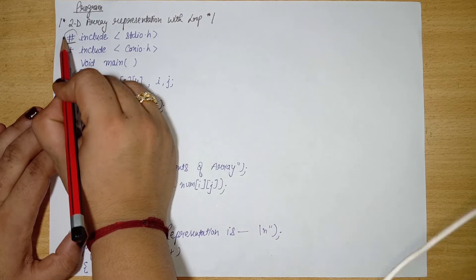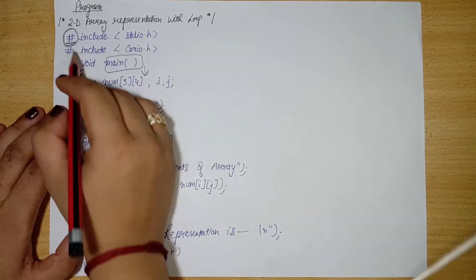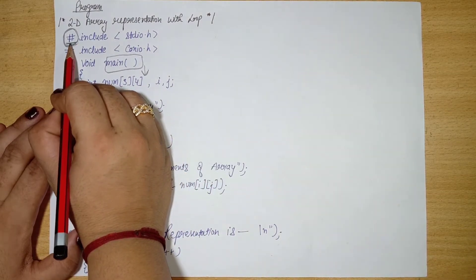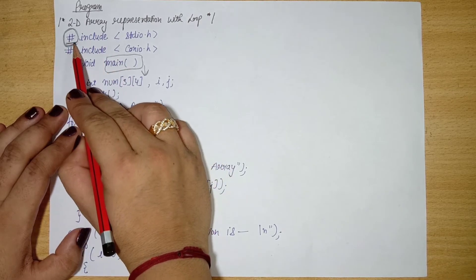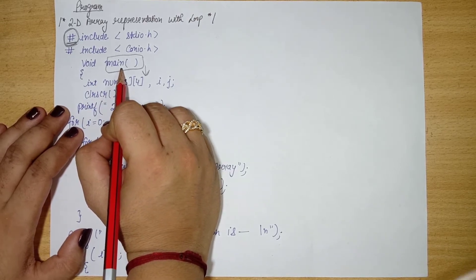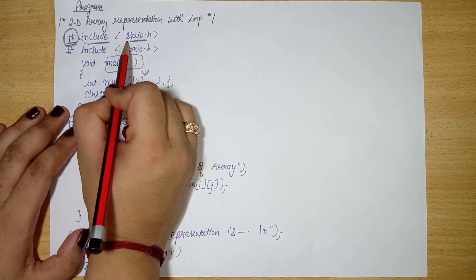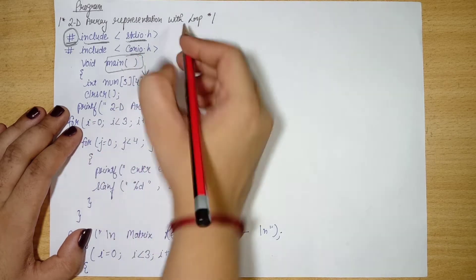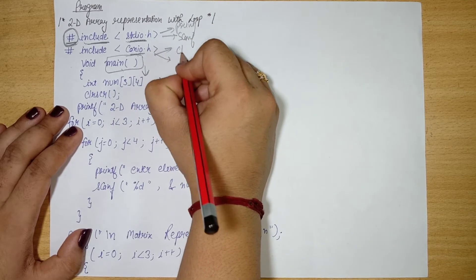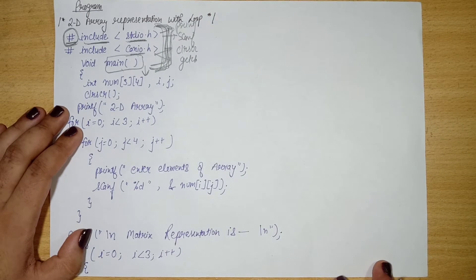First we have the hash symbol, which you all know is the preprocessor directive. The compiler starts reading the program from main, but the preprocessor processes the lines above main before compilation. Include is used to include header files. The first header file is stdio.h — standard input/output. The second is conio.h — console input/output. Functions like printf, scanf, clrscr, and getch come from these library files.